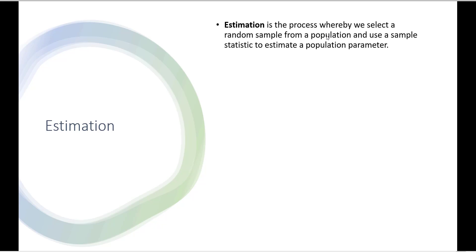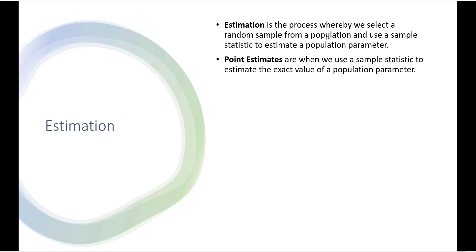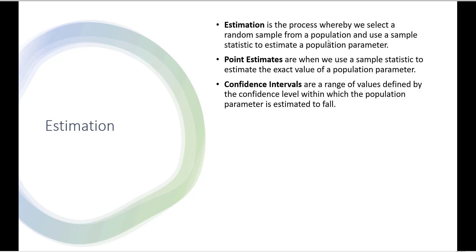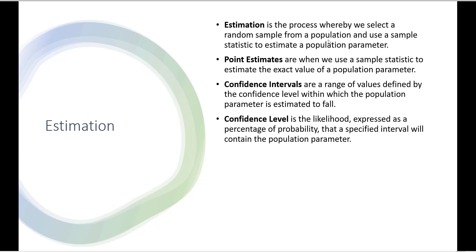Estimation is the process whereby we select a random sample from a population and use this sample to generate a sample statistic that we then use to estimate a population parameter. Point estimates are when we use a sample statistic to estimate the exact value of a population parameter. Confidence intervals are a range of values defined by the confidence level within which the population parameter is estimated to fall.